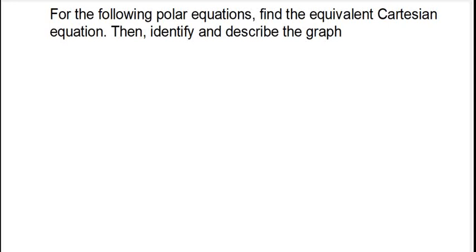Welcome back to the channel. Let's look at some questions under conic sections — for the following polar equations, we have to find the Cartesian equation, then identify and describe the graph. Before I go any further, one thing I want to emphasize is that when converting polar equations to Cartesian, don't always expect to get a conic section such as a circle, ellipse, parabola, or hyperbola. Sometimes it can be any other equation — a straight line, an identity function, anything. You should just be ready for anything.